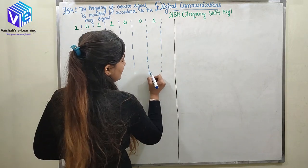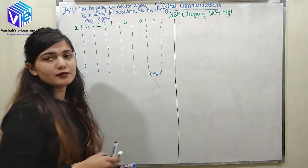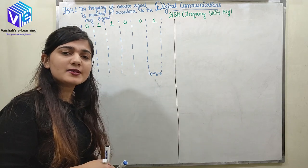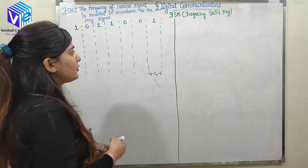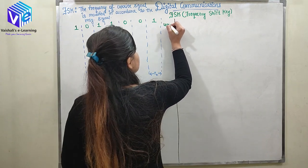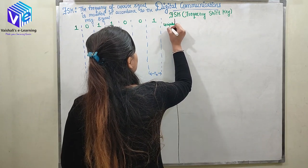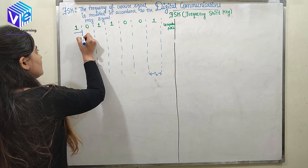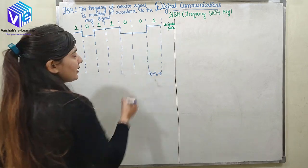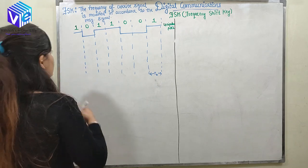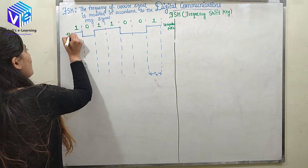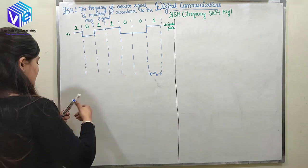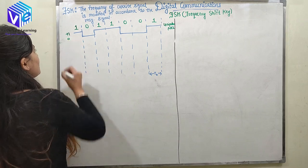The bit duration is TB. The message signal is a digital signal: 1011001. If I represent this digital signal using unipolar NRZ line encoding, then according to unipolar NRZ, 1 is represented by 1 and 0 is represented by 0. Here I'm taking a generalized case where the positive voltage is plus 1, so the signal is represented by plus 1 and 0.